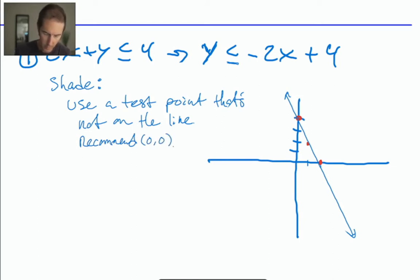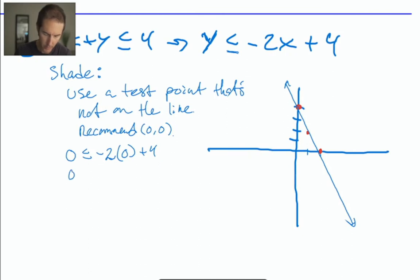Recommend (0,0). So let's try it. I'm going to plug in a zero for my y value is less than or equal to negative two times a zero for my x value plus four. We see that zero is supposedly less than or equal to positive four. Now that's a true statement. Zero is less than or equal to four. True. So shade the region that includes the test point. In this case, our test point is below the line. So I'm going to shade the region that's below my line.